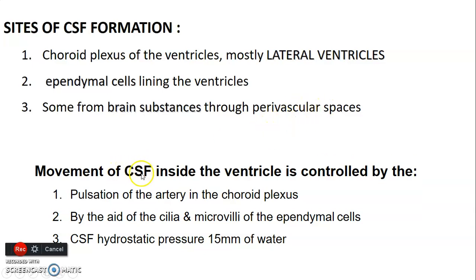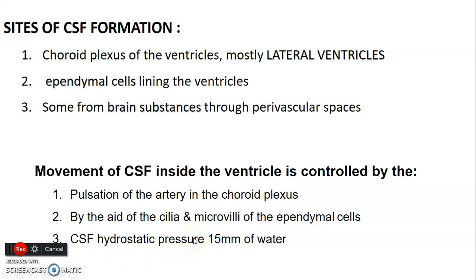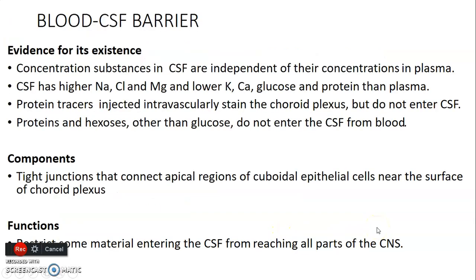What ensures the movement of CSF inside the ventricles? First, movement is controlled by pulsation of the arteries — the subarachnoid space contains arteries and as they pulsate, CSF flows. Second, cilia and microvilli of the ependymal cells aid propulsion of CSF. Third, the hydrostatic pressure of CSF at 15 millimeters of water also ensures CSF is in circulation.